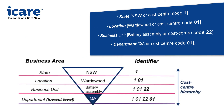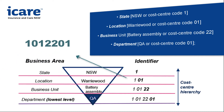Here's an example of a cost centre hierarchy. If a claim was lodged against the QA department in NSW at Worrywood, in the battery assembly unit, then the cost centre would be 1012201.